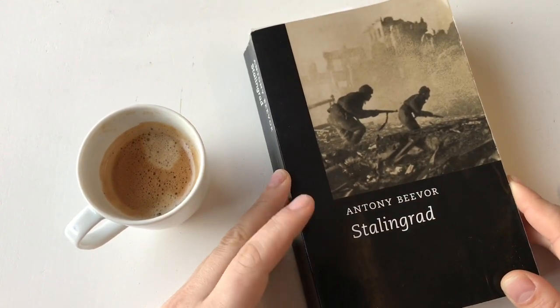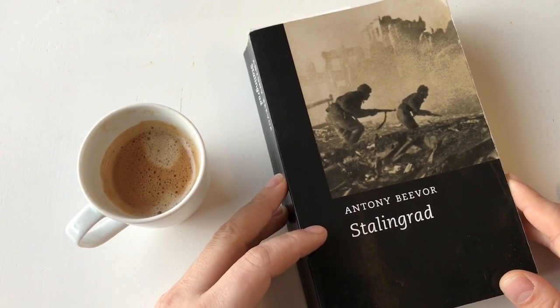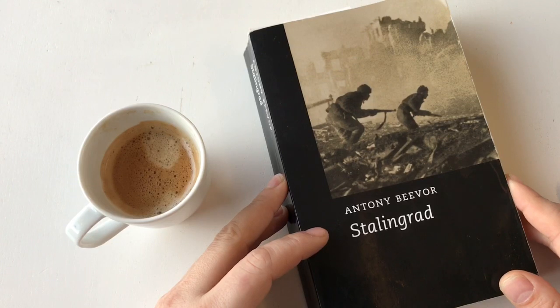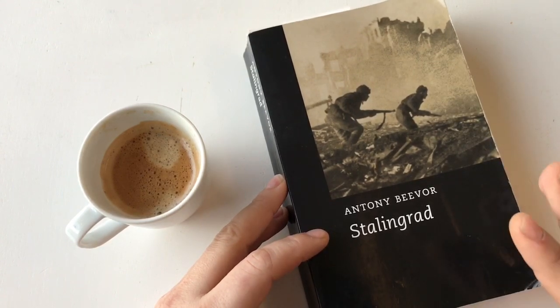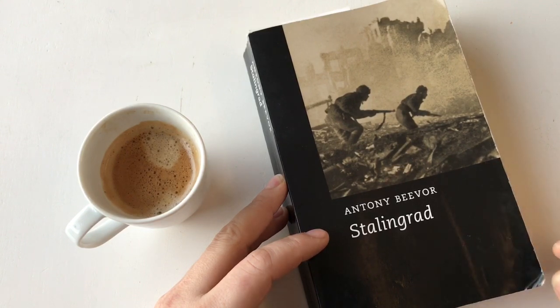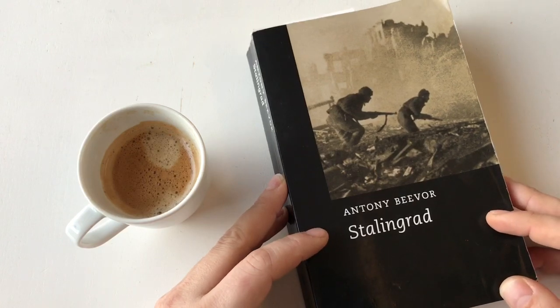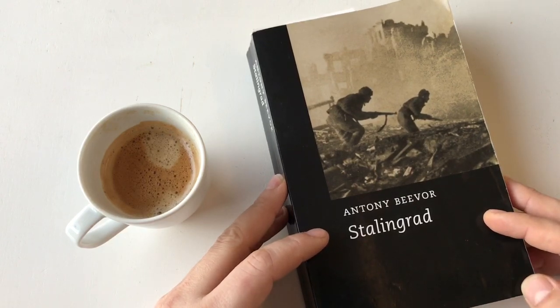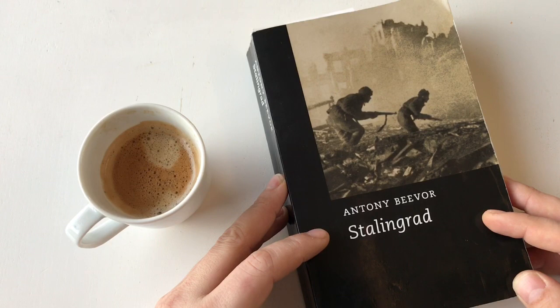It's written by Anthony Beevor - not sure how to pronounce his name correctly, but it's a great book that tells the history of the World War II Battle of Stalingrad, where the sixth German army was closed in and beaten by the Russian Red Army.